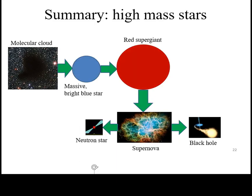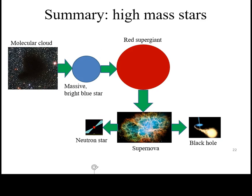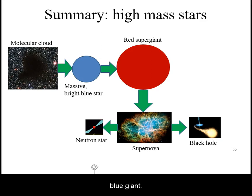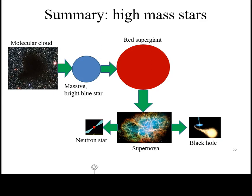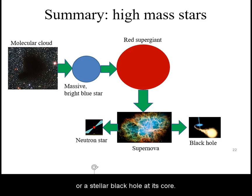High-mass stars also form from molecular clouds, burn through their fuel wastefully as a blue giant. When they run low on their fuel, they expand into a red giant, which then explodes as a supernova, leaving behind either a neutron star or a stellar black hole at its core.